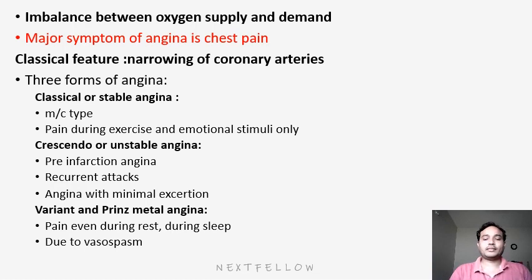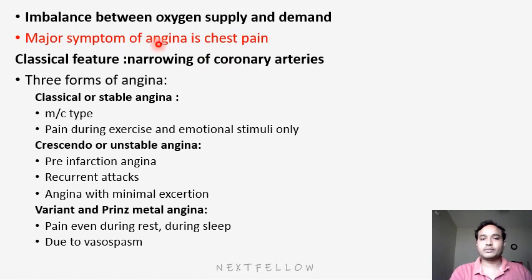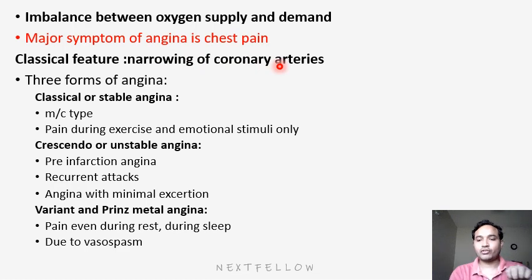The major feature of angina pectoris is mainly the imbalance between oxygen supply and body demands. There will be decreased oxygen supply relative to body demands. The main symptom is chest pain. The main pathology is narrowing of coronary arteries. Blocking of coronary arteries leads to decreased blood supply to the tissue, and obviously they will generate pain.